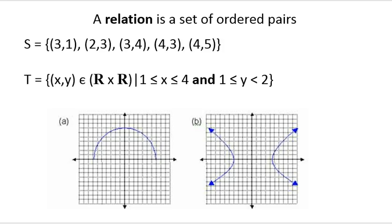Recall that a relation is a set of ordered pairs. Here are two symbolic representations of relations. The relation S is a set of ordered pairs — in this case, the set {(3,1), (2,3), (3,4), (4,3), and (4,5)}, so S consists of these five elements.